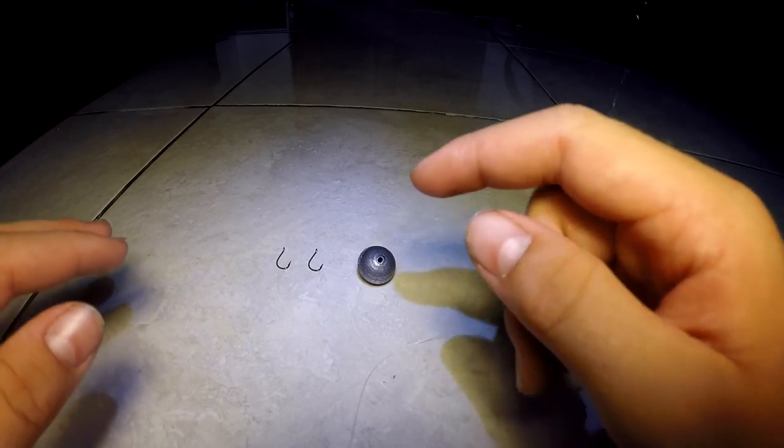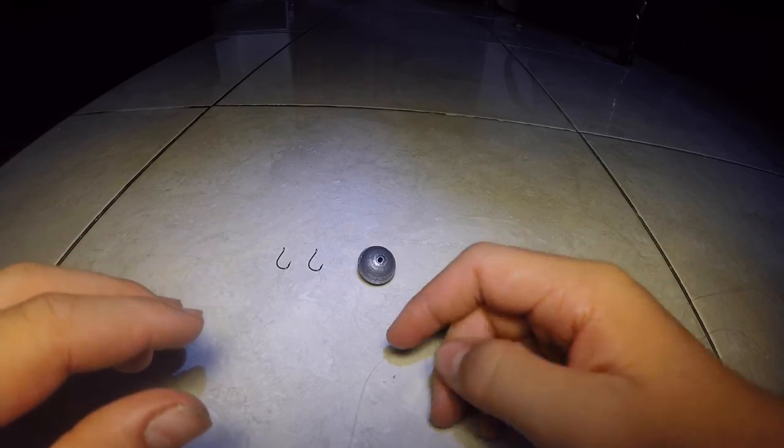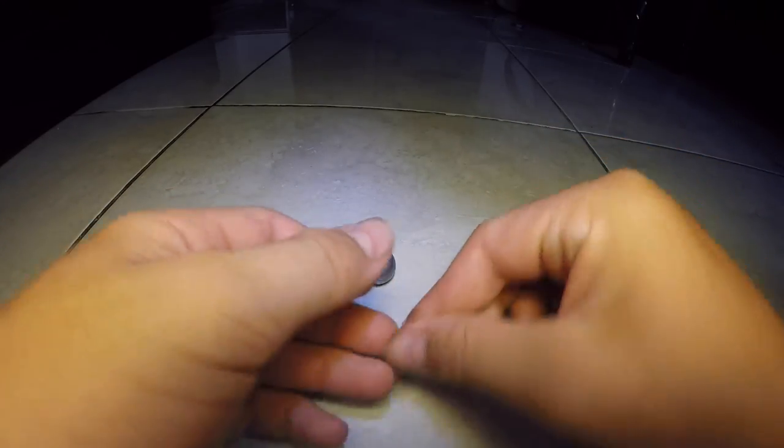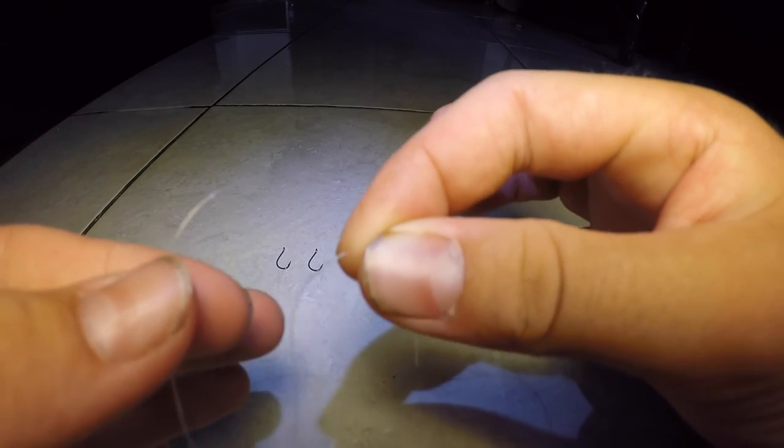So let's get straight to it. There is only one kind of knot that you need to know for this and that is just the simple loop knot. So you're going to take the fishing line like this.